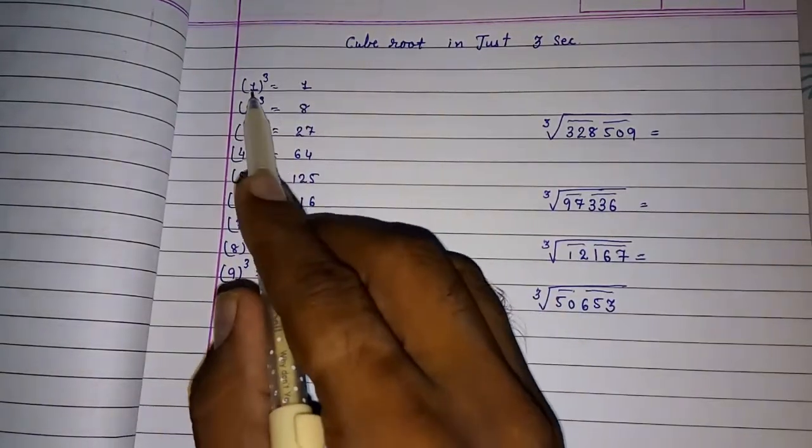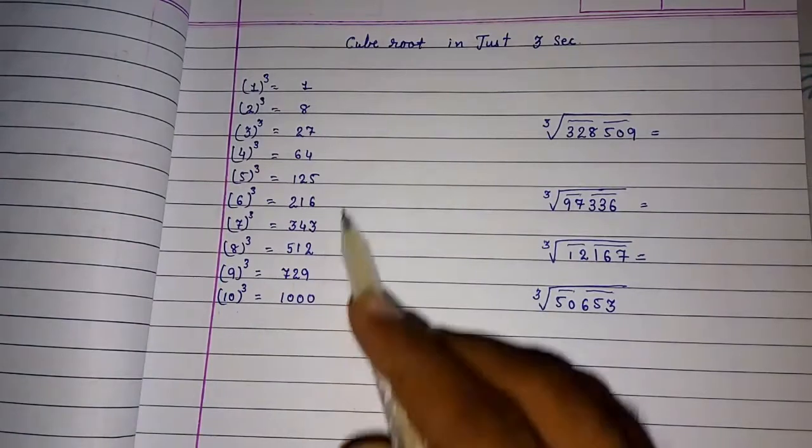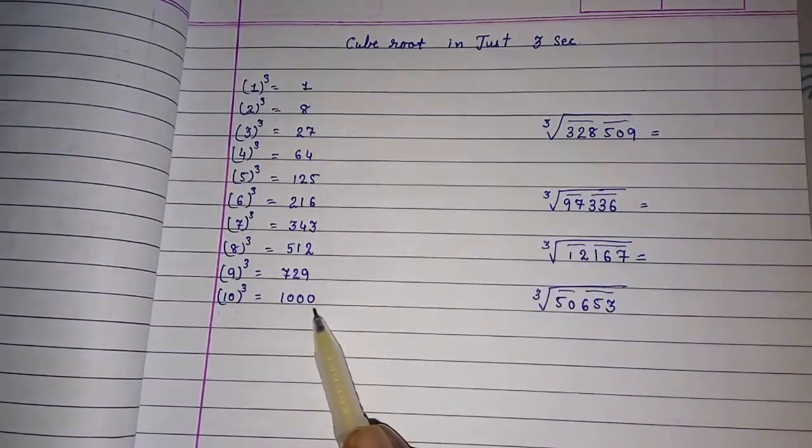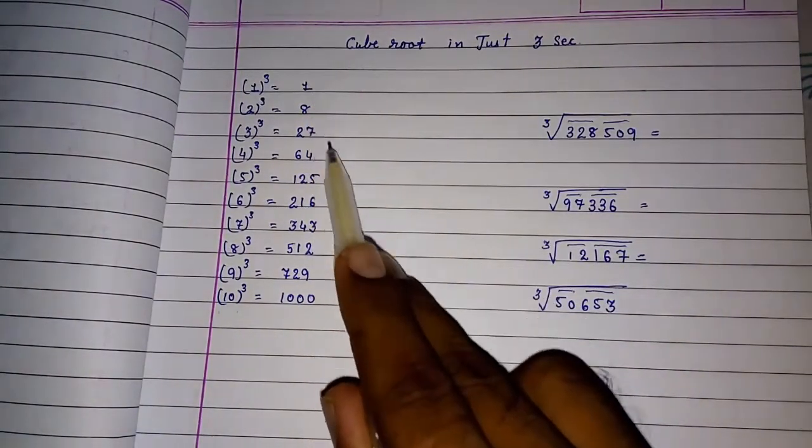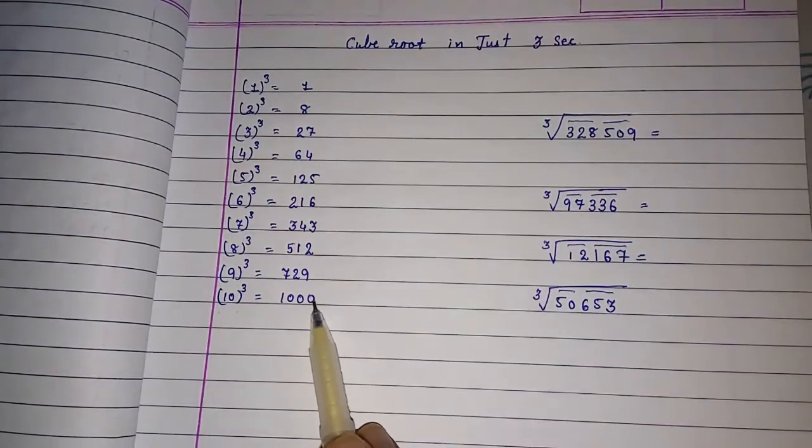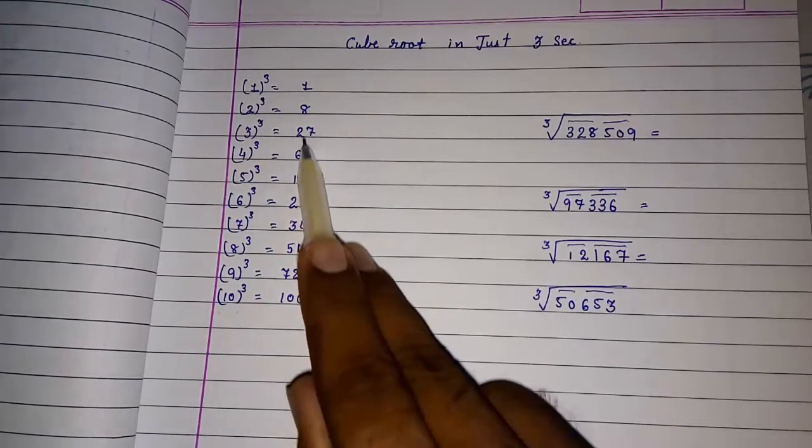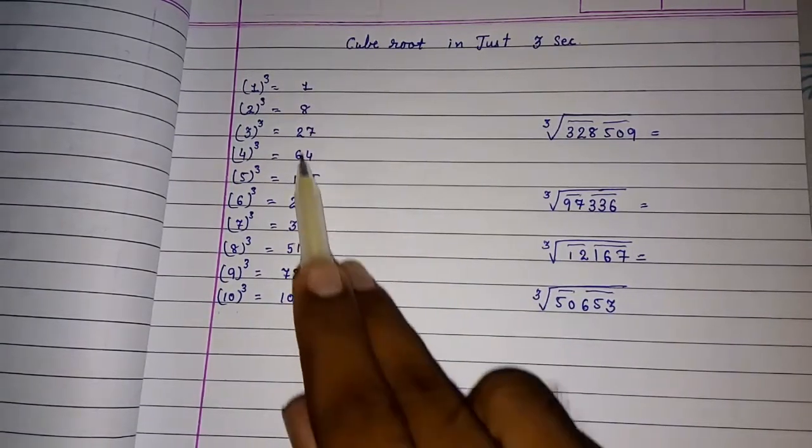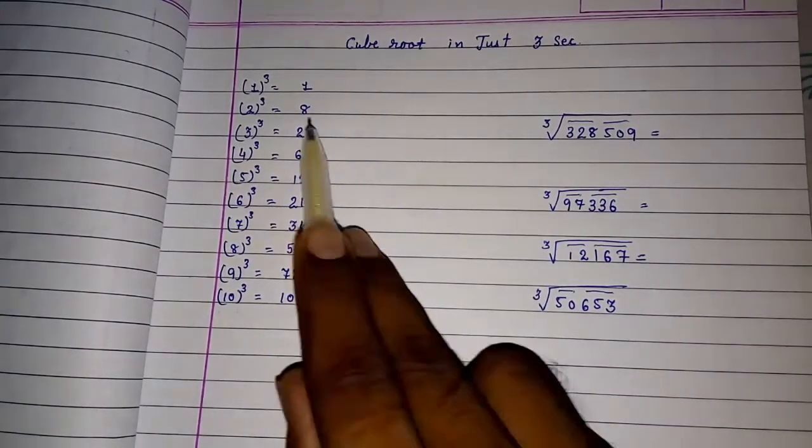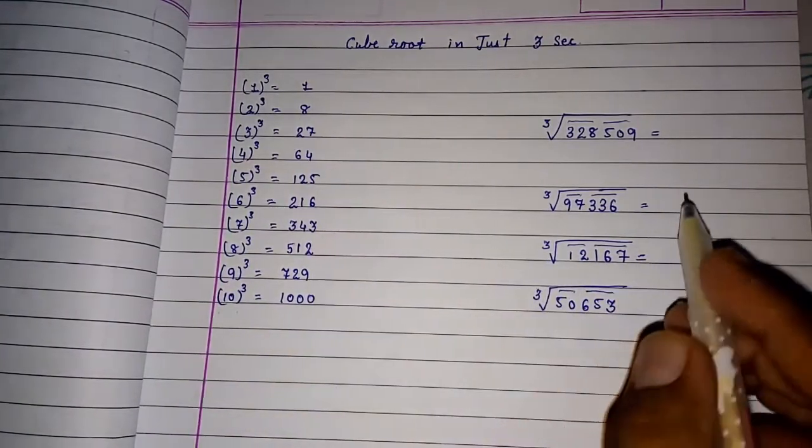Now we have to see, look here. In the ending of this cube, you will find all the integers from 1 to 10. 1, 8, 7, different integers are there. You can see 0, 9, 2, 3. No integer is repeated from 1 to 10. So it will be easy for us.